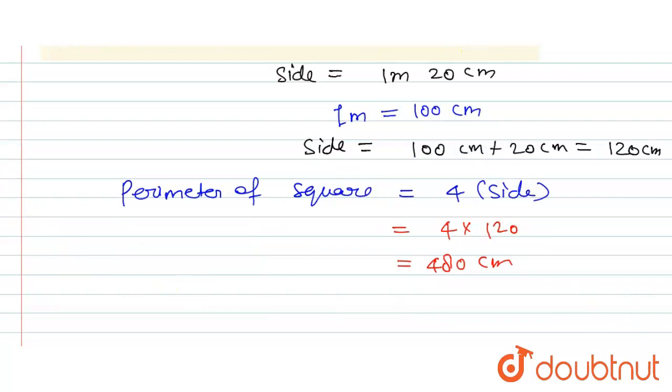So this is going to be equal to 480 centimeters. Now we will calculate the area. So area can be calculated by the formula area of square